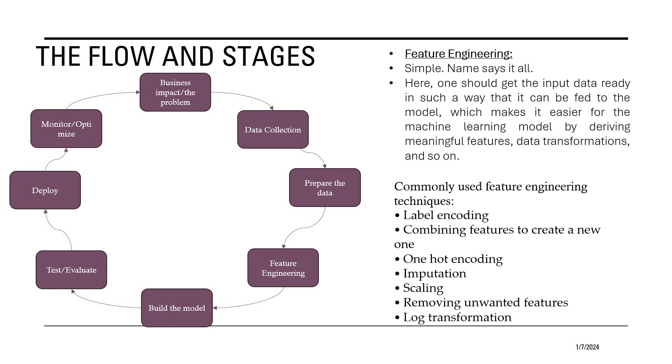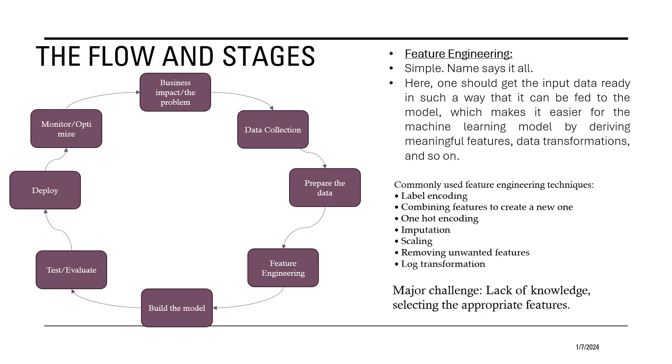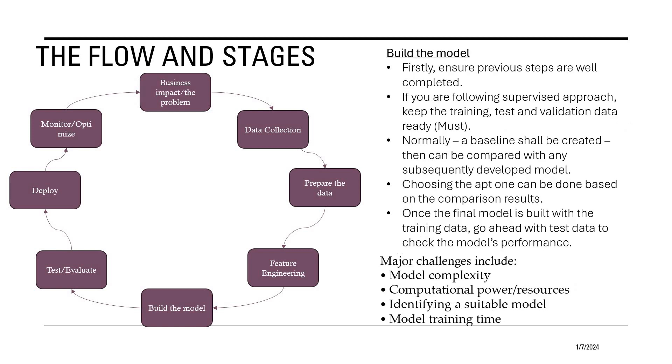The most commonly used feature engineering techniques include label encoding, combining features to create new one, one hot encoding which is a famous one, imputation, scaling, removing unwanted features and log transformation. You can choose the appropriate method and get the feature engineering done. And the major challenge which we all face with respect to feature engineering stage is lack of knowledge and selecting appropriate features.